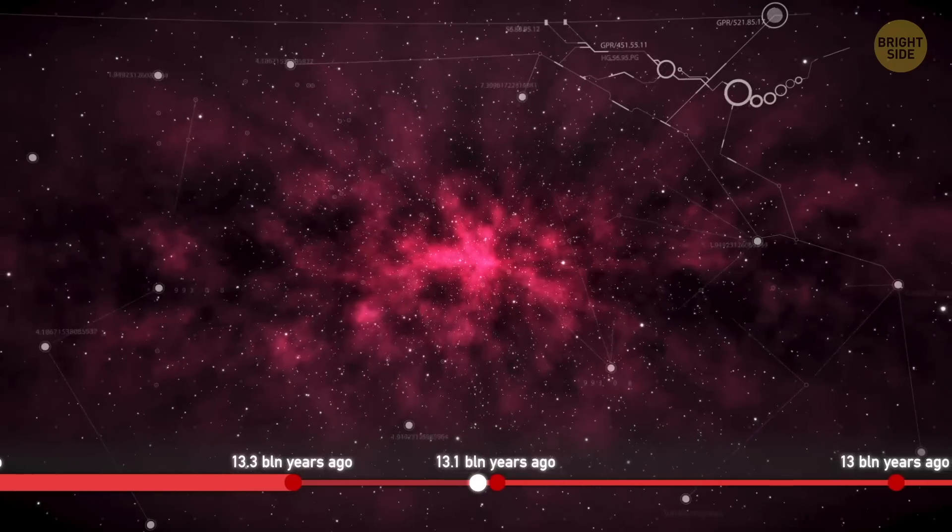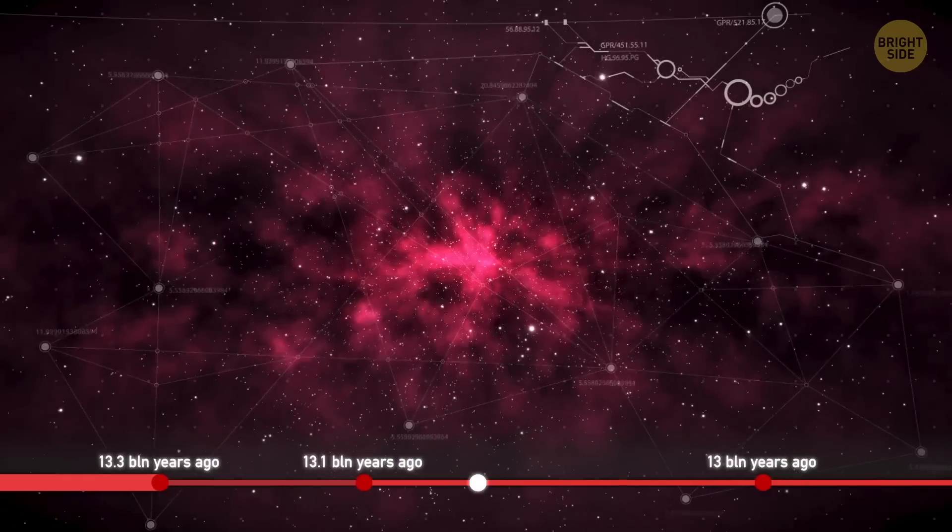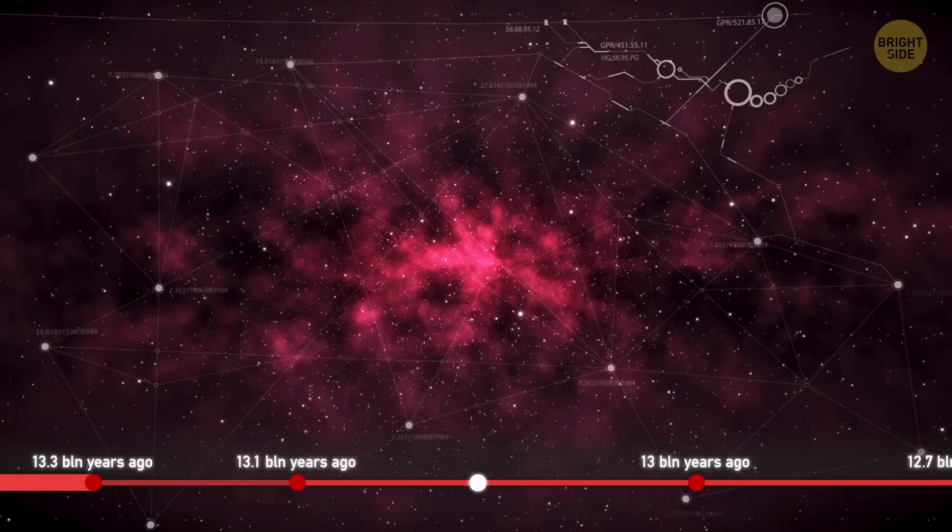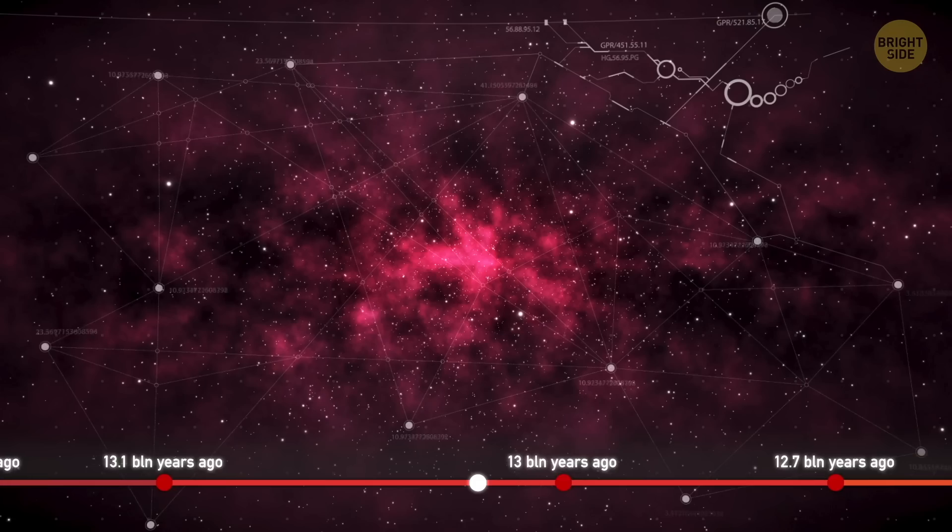The earliest of them didn't include any planets, though. It was still too soon for matter to shape into something so big and solid. So, galaxies mainly consisted of stars and interstellar gas.